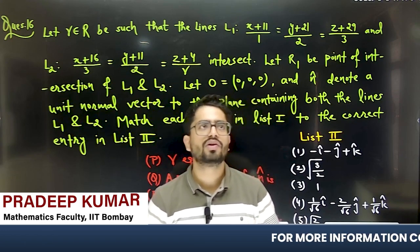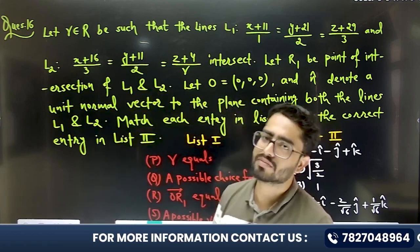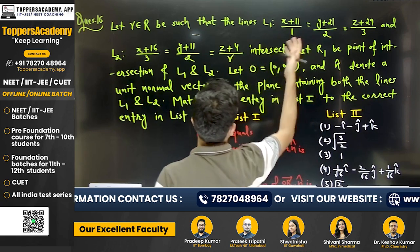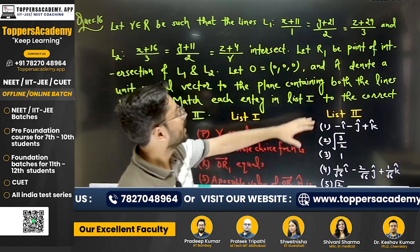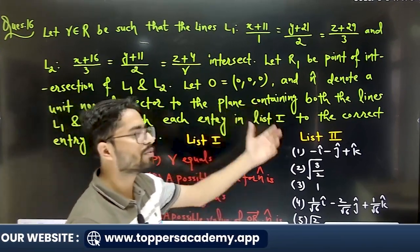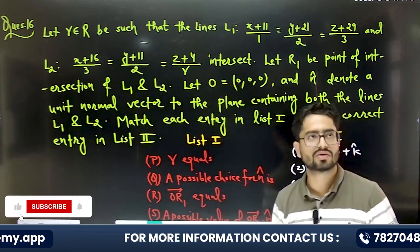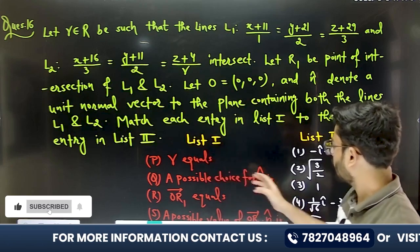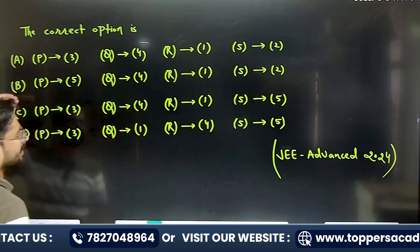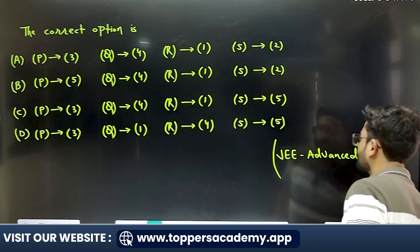Hello students, in this video we will discuss one question from JEE Advanced 2024 — question number 16. Gamma is a real number such that two lines l1 and l2 intersect each other. R is the point of intersection of l1 and l2, O is the point (0,0,0), and n̂ is the normal unit vector to the plane containing these two lines. We have to find the correct matches.